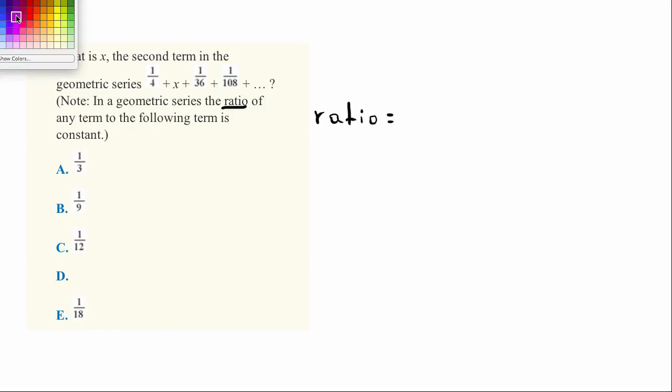the ratio of any term to the following term is constant. And what that means, when we take a ratio, we divide two terms.